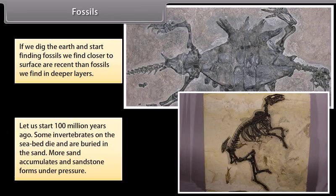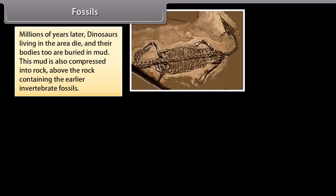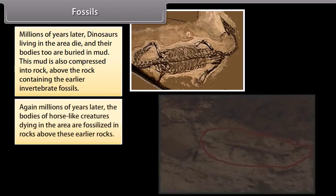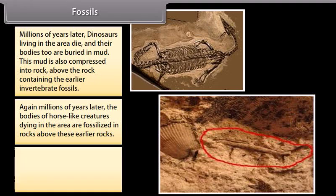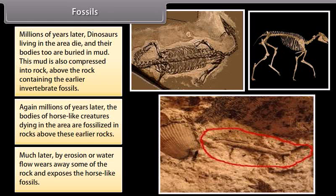Starting 100 million years ago, some invertebrates on the seabed die and are buried in sand. More sand accumulates and sandstone forms under pressure. Millions of years later, dinosaurs living in the area die and their bodies are buried in mud, which is compressed into rock above the rock containing the earlier invertebrate fossils. Again, millions of years later, horse-like creatures dying in the area are fossilized in rocks above these earlier rocks. Much later, by erosion or water flow, some rock wears away and exposes the horse-like fossils.